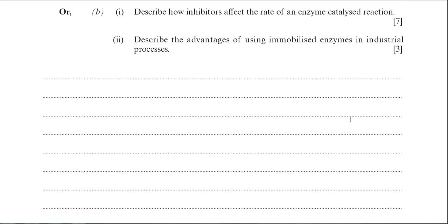This is question 8, part B, on the January 2011 BY-1 paper. This long answer question is split into two parts. The first part looks at inhibitors, while the second part looks at immobilised enzymes in industrial processes — specifically the advantages of immobilised enzymes. Let's start with part 1 first, which is worth 7 marks.